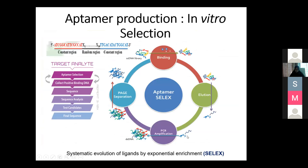Now we already know what aptamers are and the advantages of aptamers, so why do we need to produce them? The basic process of aptamer production is in vitro selection. For this lecture, I will only cover in vitro selection, not in silico selection. The SELEX process — Systematic Evolution of Ligands by Exponential Enrichment — is an iterative process required during aptamer selection, comprising four main steps.